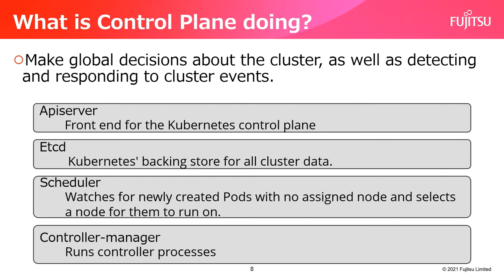What is the control plane doing? The control plane's components make global decisions about the cluster — for example, scheduling — as well as detecting and responding to cluster events, for example, starting up a new pod when a deployment replica field is unsatisfied. The API server is a component of the Kubernetes control plane that exposes the Kubernetes API. The API server is the front end for the Kubernetes control plane. It accepts the request, determines if it is valid, and processes it. It is the only component that communicates with etcd.